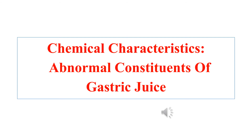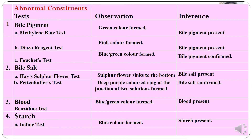Now let us look at the abnormal constituents of gastric juice, which include bile pigments, bile salts, blood, and starch. Tests for bile pigments include the methylene blue test, diazo test, and Fouchet's test — procedures available in the link provided for abnormal urine and bile. Similarly for bile salts. Now let us see how the tests for blood and starch are done.